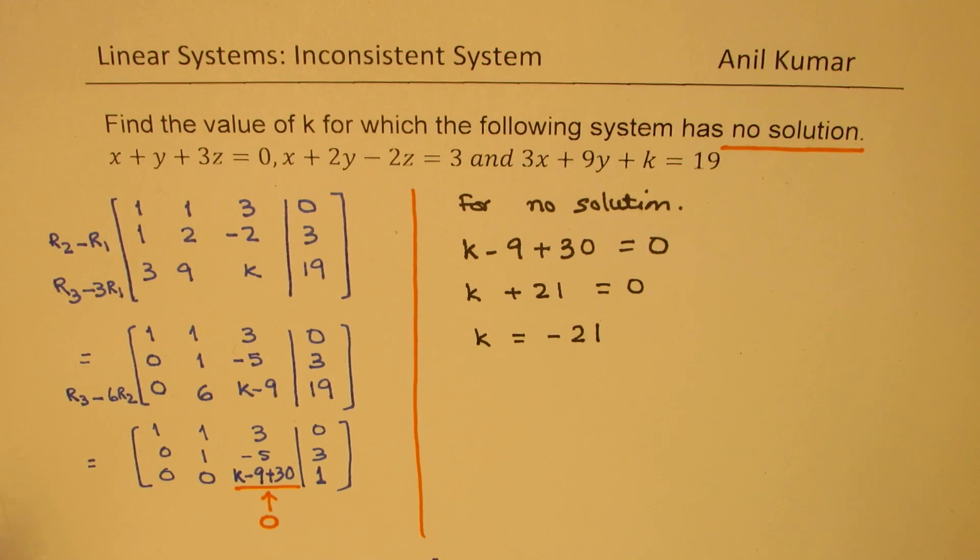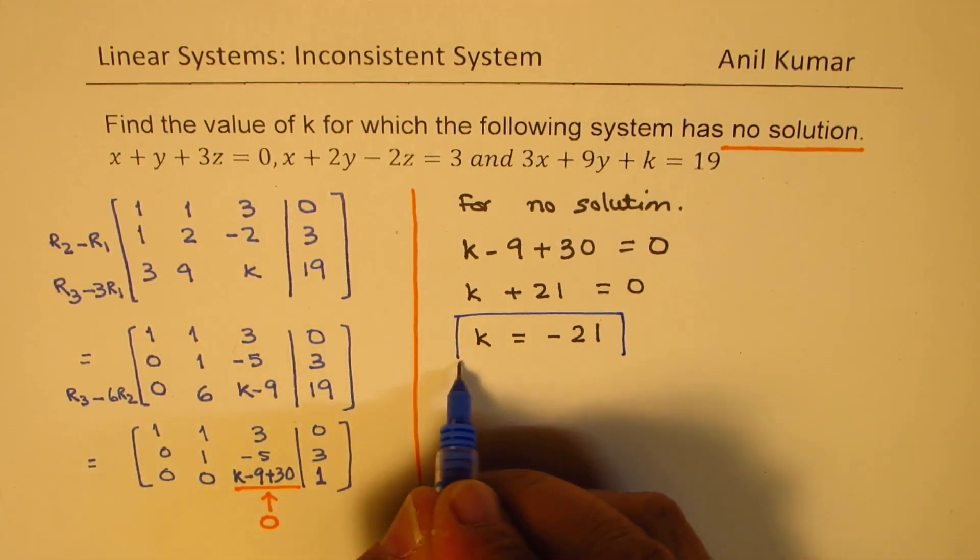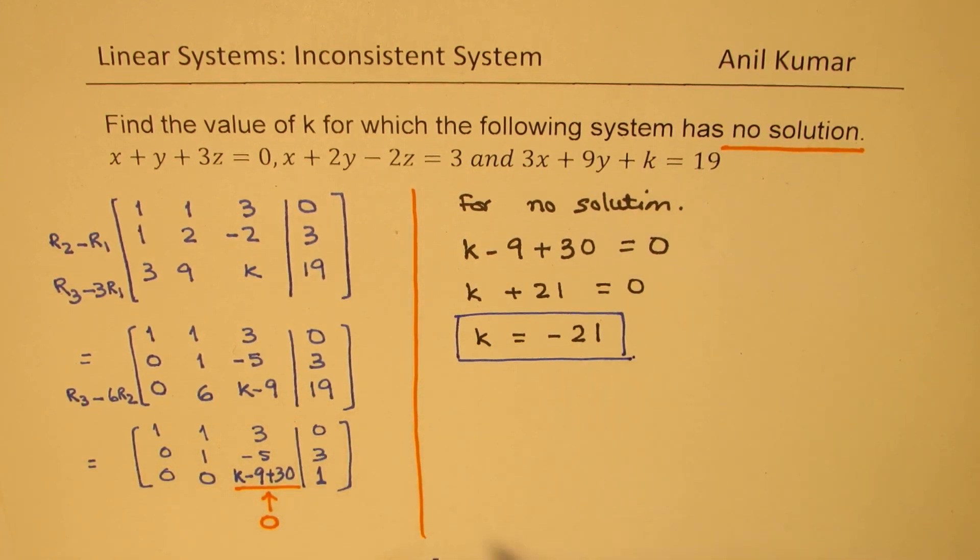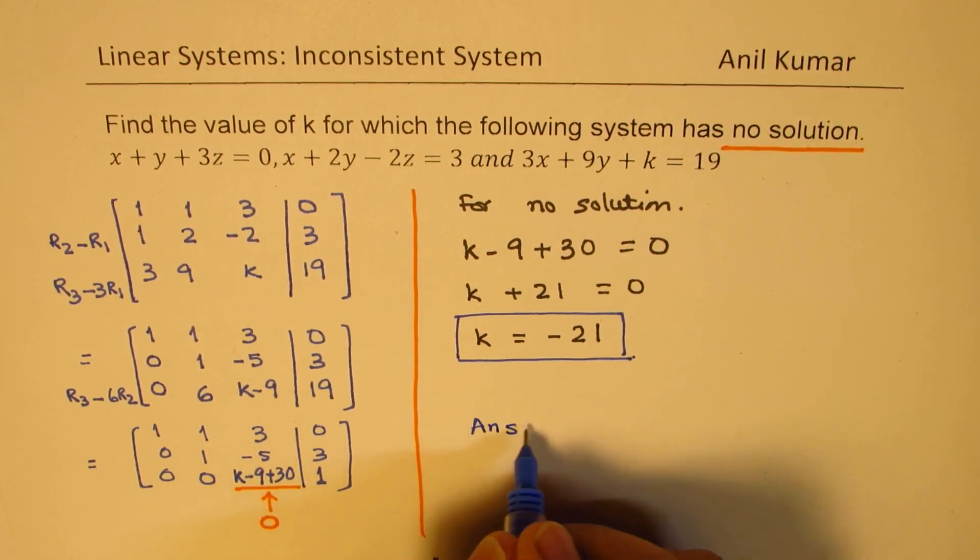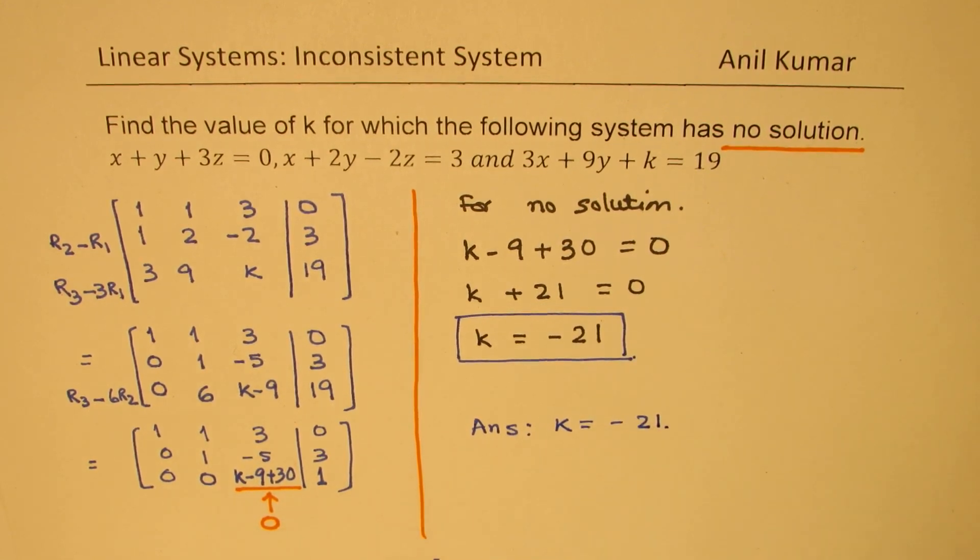So that becomes the solution for this particular question. So I hope it is absolutely clear. So our answer here is that k should be equal to minus 21. So I hope that makes sense.